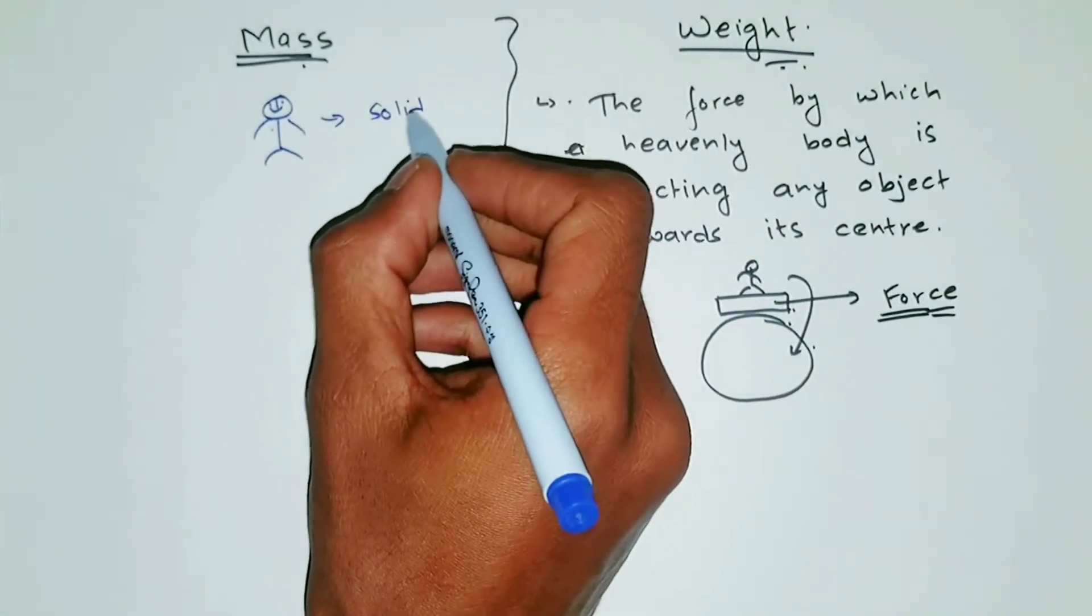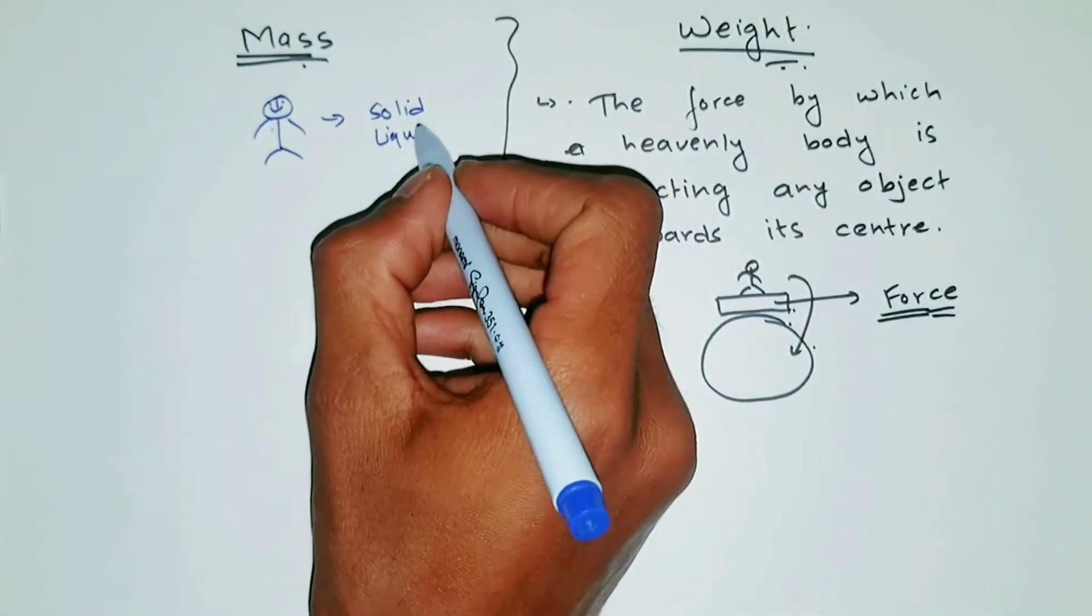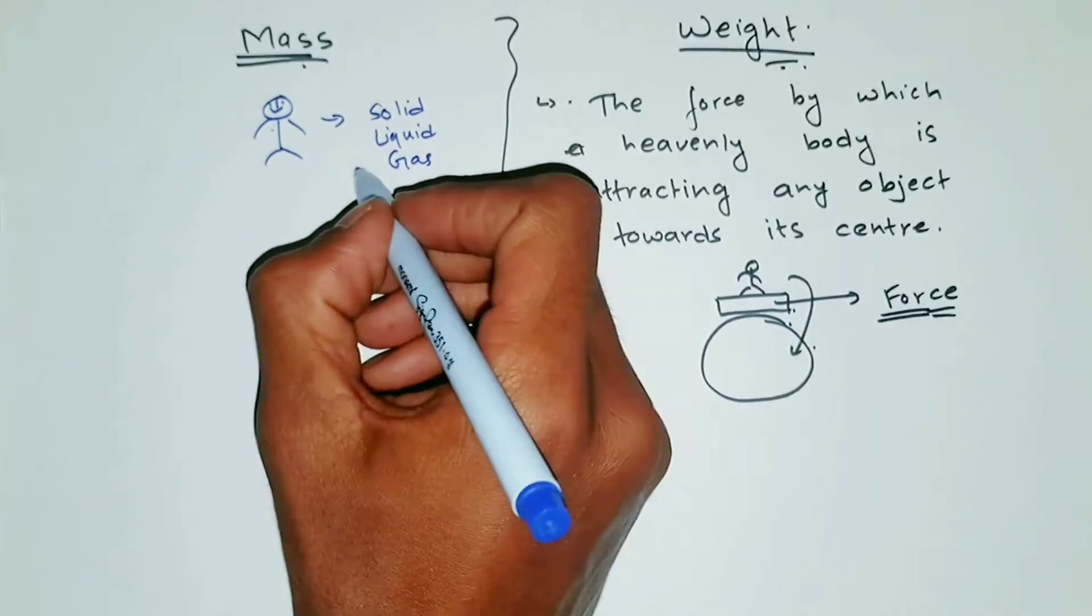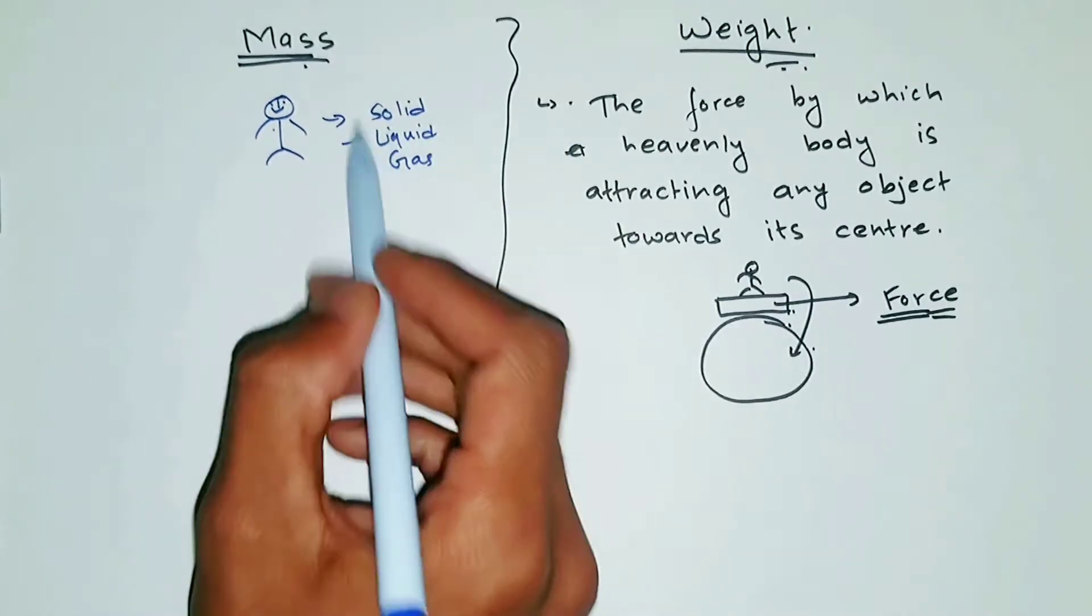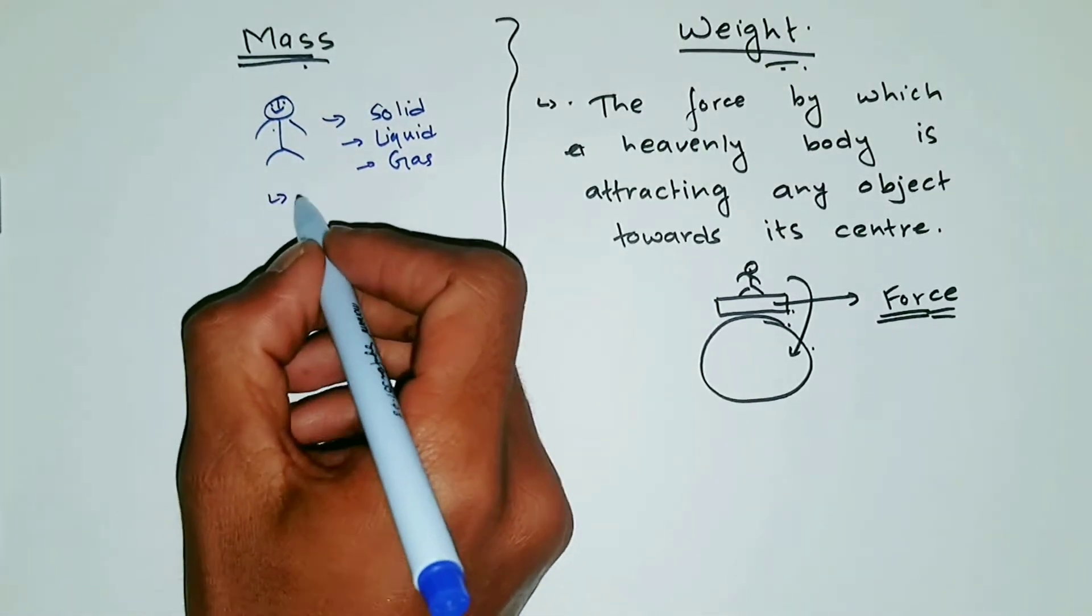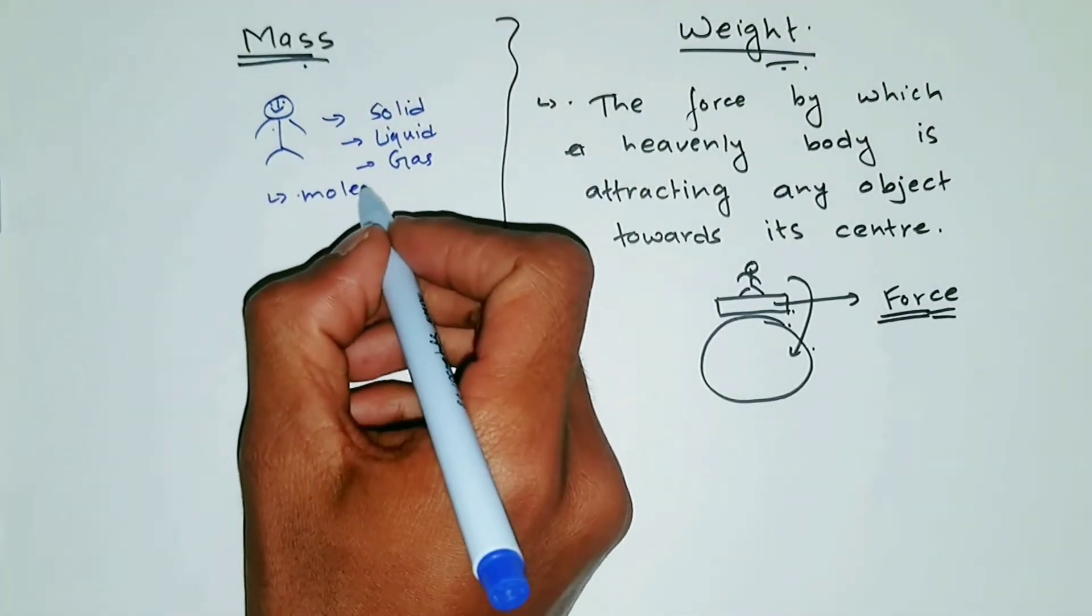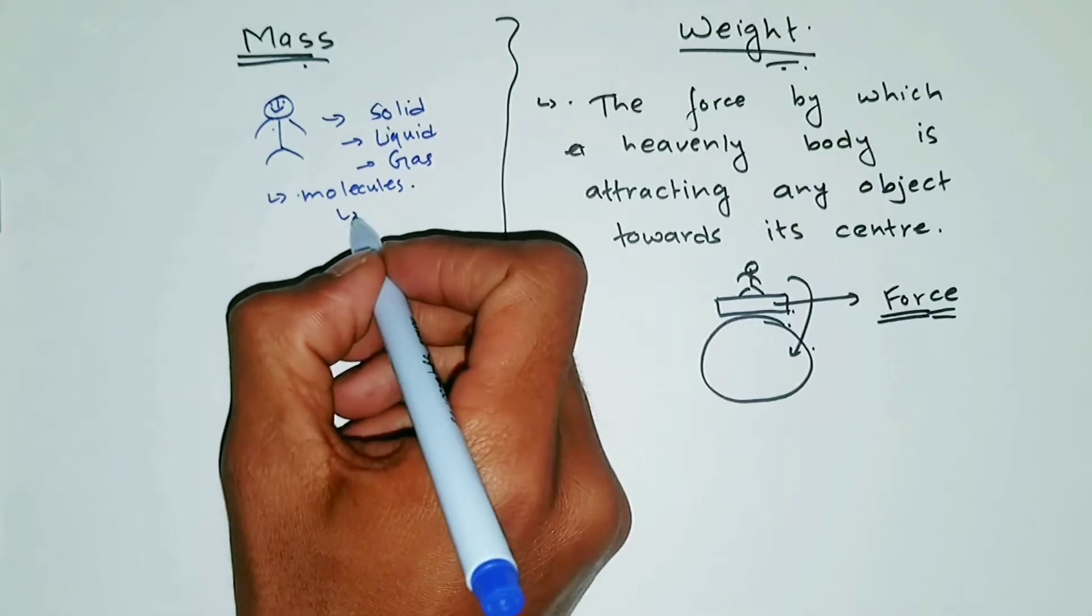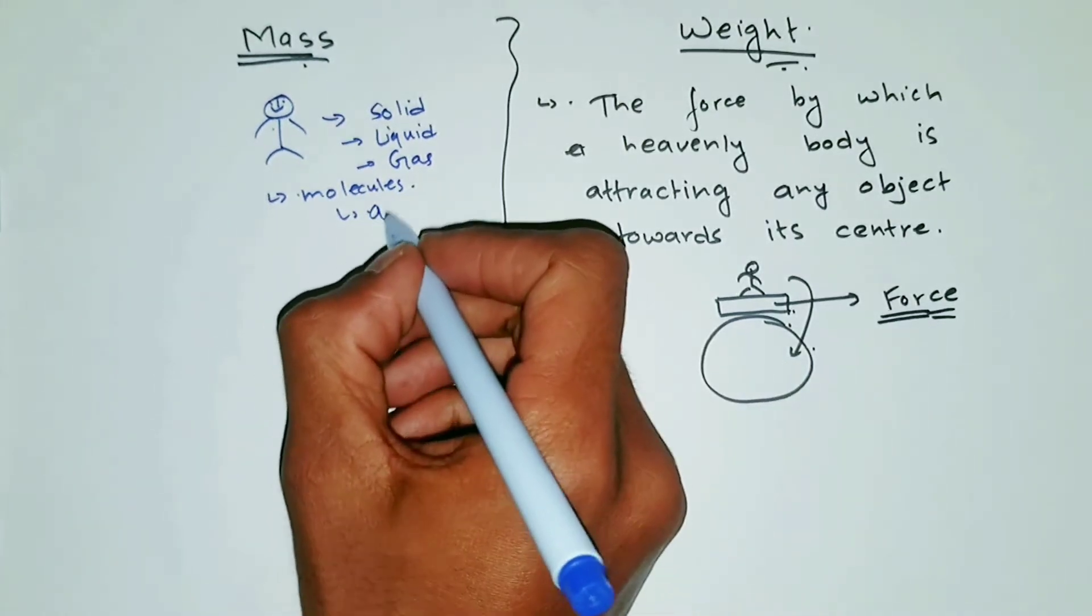So there is solid, and there is liquid, and probably some gas in his lungs. So all of these things, or all of this matter, if we break it down to small particles, then this body is made up of molecules, and again if we break it down, it is made up of atoms.